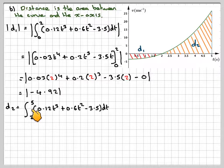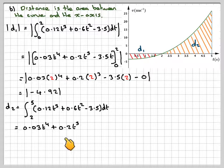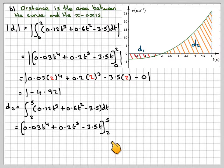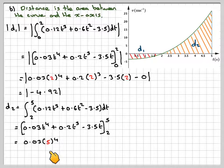d2 will be from 2 to 5 of the same integral, so integrating exactly the same, 0.03t to the 4, 0.2t cubed minus 3.5t from 2 to 5.